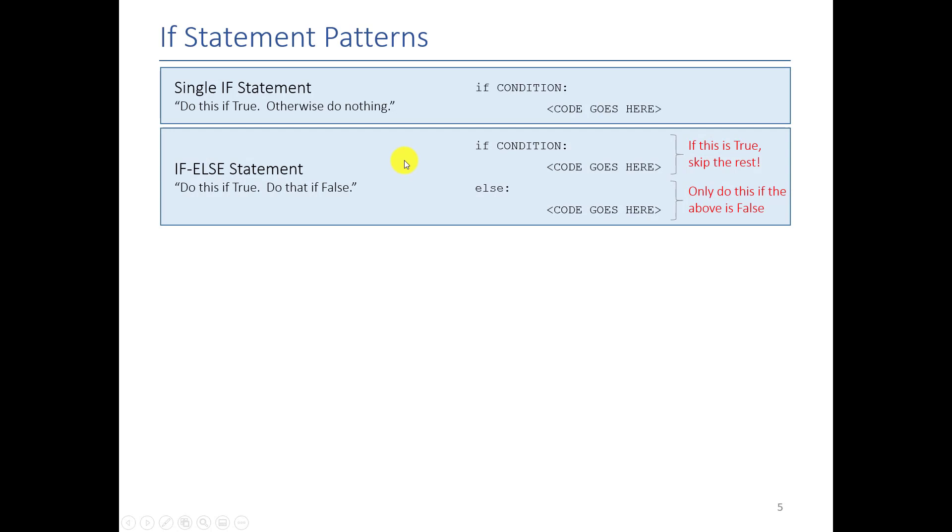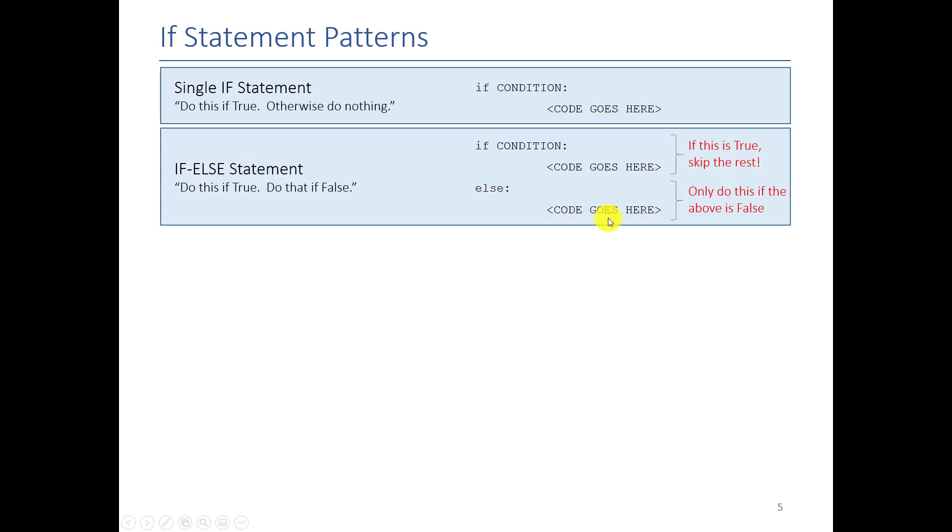And then we talked about if statement patterns. We talked about the idea of having a single if statement which is basically do this code if it's true and do nothing else if it's false. We talked about if else statements, this is the do this if this is true otherwise do this code if this is false. Then we talked about how we can have as many branches as we want by using else if, so we say if this condition is true run this code else if this condition is true run this code and we can do it as many times as we want and we can put an else at the end. So this is when you want to have lots of branches.